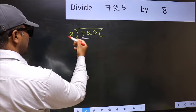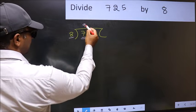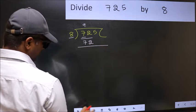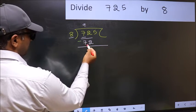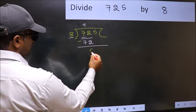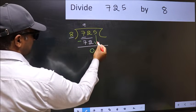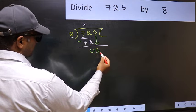When do we get 72 in 8 table? 8 nines, 72. Now we should subtract. 72 minus 72, we get 0. After this, bring down the beside number. So 5 down.